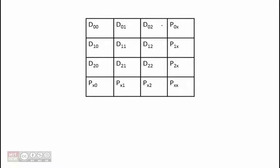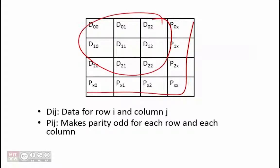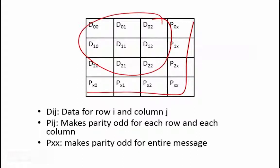In this problem, messages consist of 9 data bits and 7 parity bits. Each DIJ represents a data bit which belongs to row I and column J. The PIJ bits are used to make the parity of each row and column be odd. The PXX box, which is in the bottom right corner, is used to make the parity of the entire message odd. In other words, it makes the total number of 1's be odd.